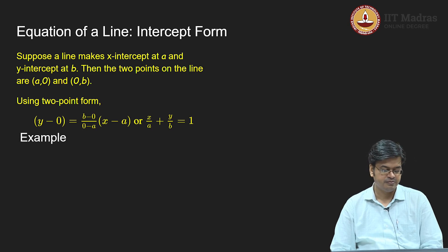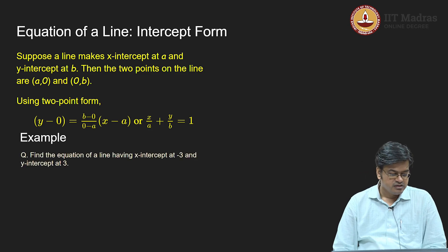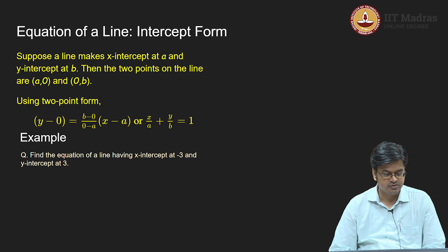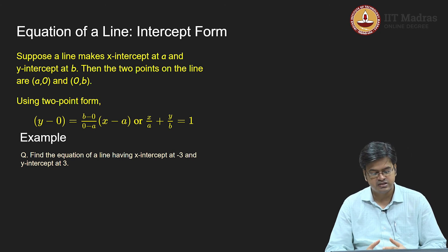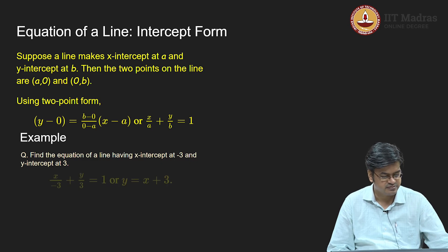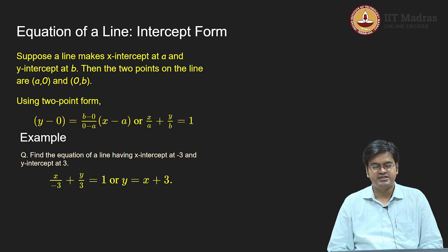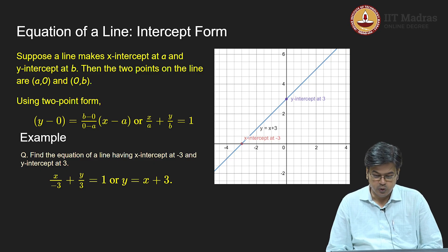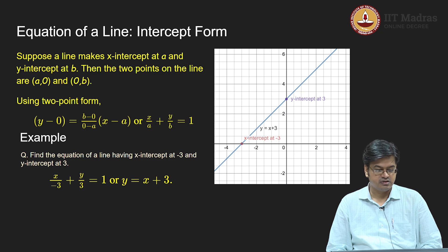Let us take one example: find the equation of a line having x-intercept at minus 3 and y-intercept at 3. You do not have to do any complicated calculations — simply write x upon minus 3 plus y upon 3 equals 1. Multiplying throughout by 3 gives y equals x plus 3. Let us verify using a graph: x-intercept is minus 3 and y-intercept is 3, and the line passing through these two points is indeed y equals x plus 3. This is the intercept form — very simple, and you can practice more problems.